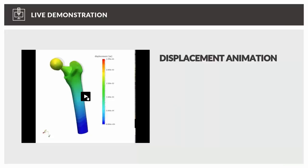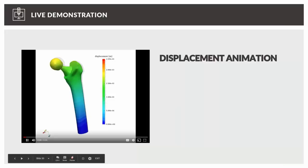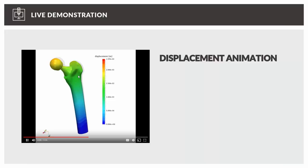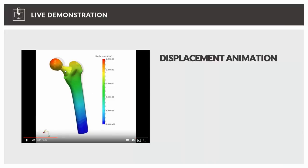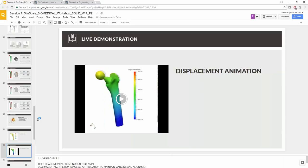A displacement video shows over 10 time steps how the hip moves under load. At the point of highest displacement, the foot is hitting the ground during walking — showing the full loading cycle.